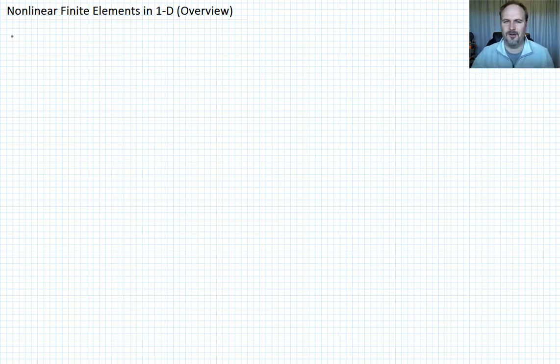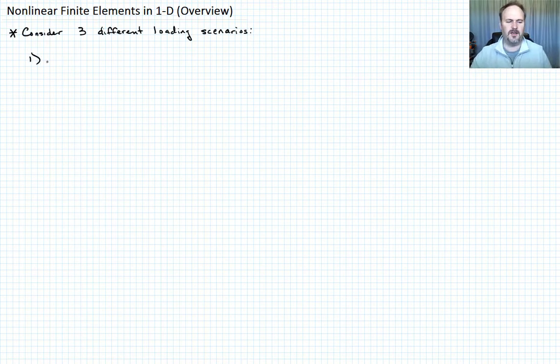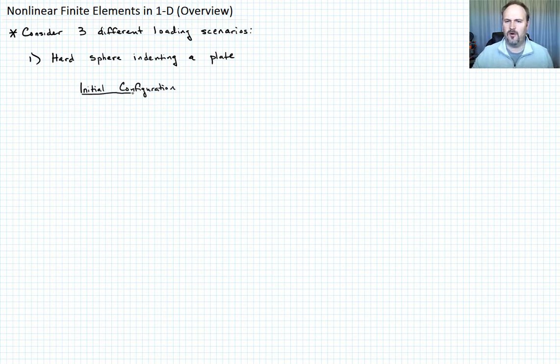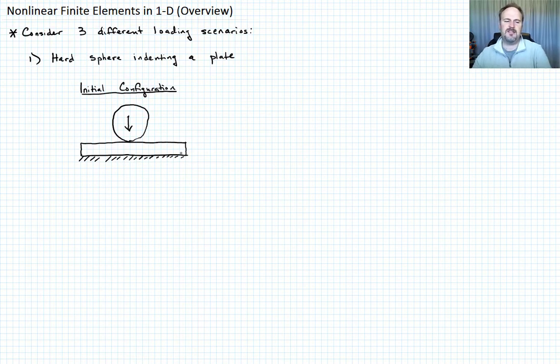So let's begin by considering three different loading scenarios. The first loading scenario that we're going to consider is a hard sphere indenting a plate. Let's talk about what the initial configuration looks like. This is before deformation has occurred. Let's just choose this to be our plate. And we'll draw our sphere, it's going to impact or contact right there. We're going to apply some load to the sphere. And let's go ahead and set the boundary condition such that this is fixed on the bottom. So that's the initial configuration.